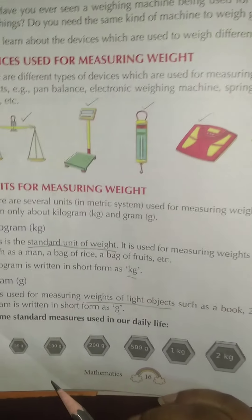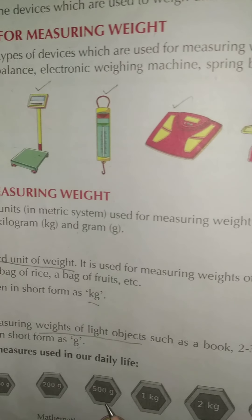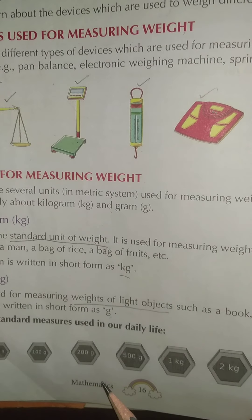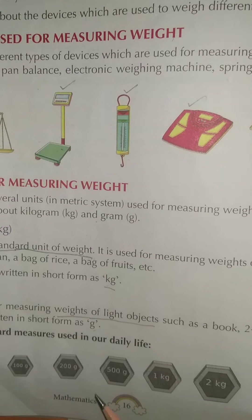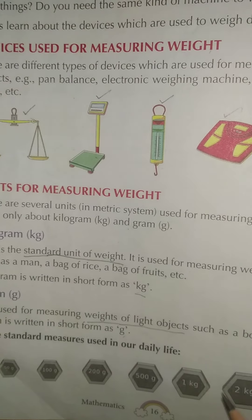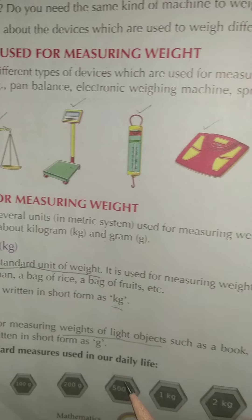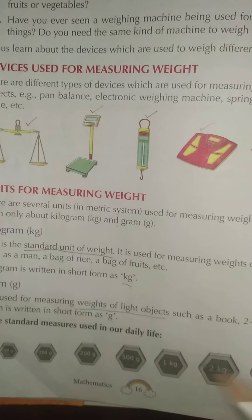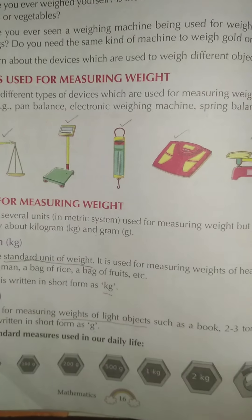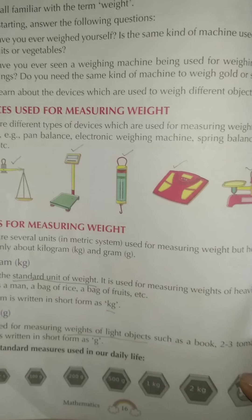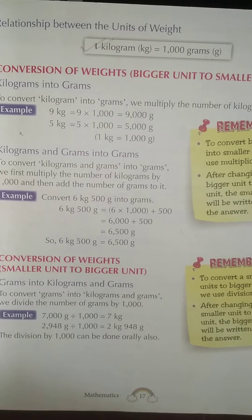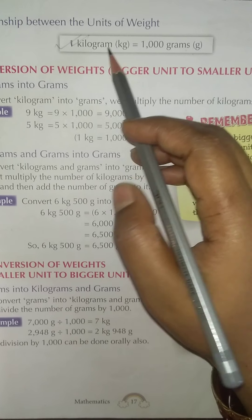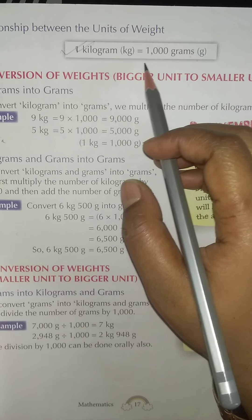Here are some standard measures used in daily life — 50 gram, 100 gram, 200 gram, 500 gram, 1 kg, 2 kg, and 5 kg. When you go to the market to purchase fruits, vegetables, or groceries, things are weighed using these standard measures.